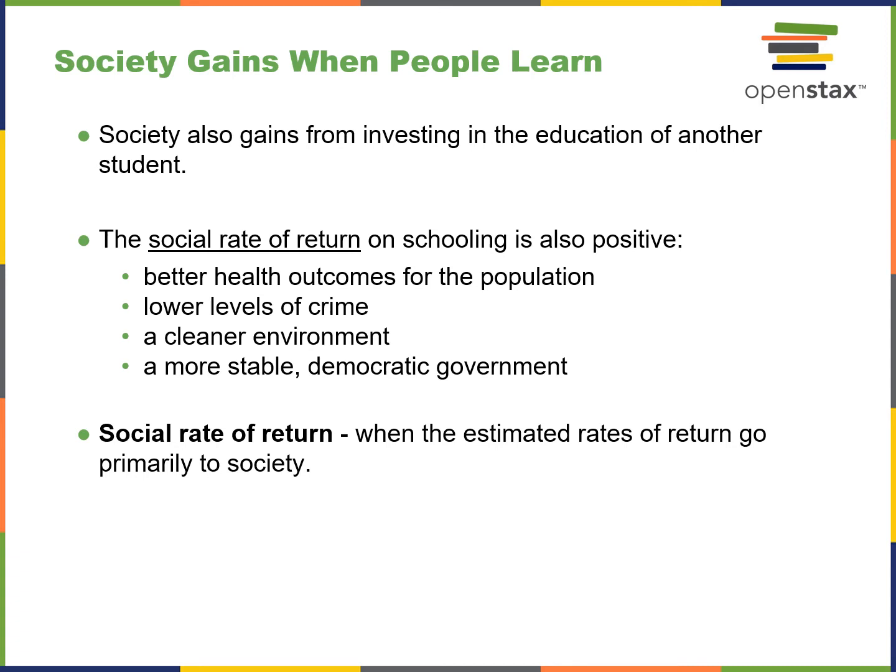The social rate of return on schooling is also positive, including better health outcomes, lower levels of crime, a cleaner environment, and a more stable and democratic government. The social rate of return is estimated when rates of return go primarily to society. This raises the question: are we becoming better and more well-educated, or is education being diluted to the degree that it is changing the societal fabric?